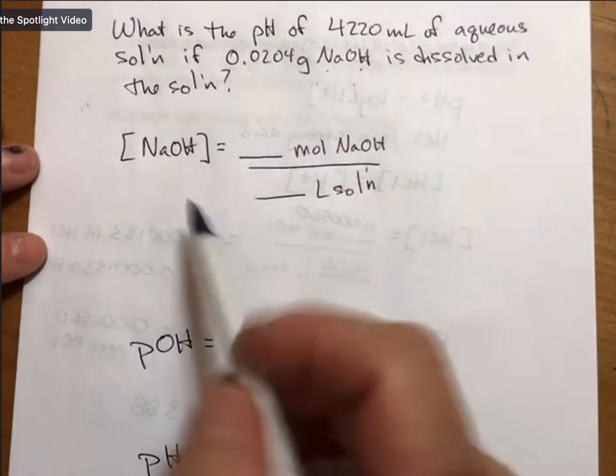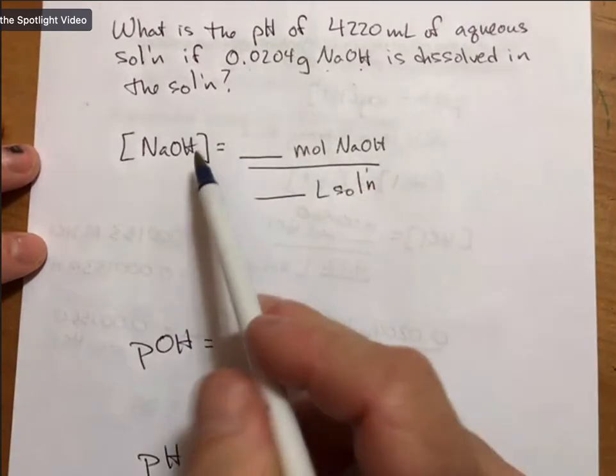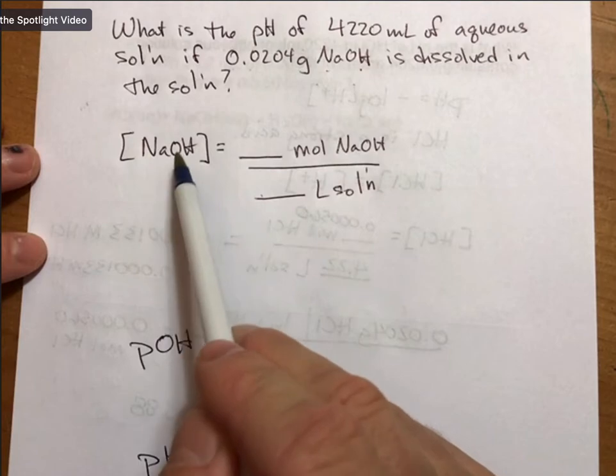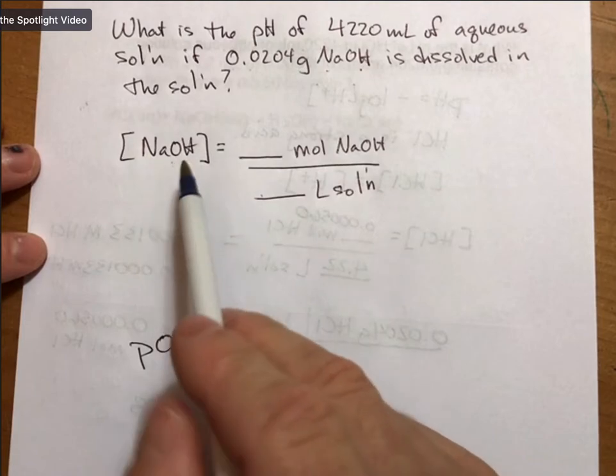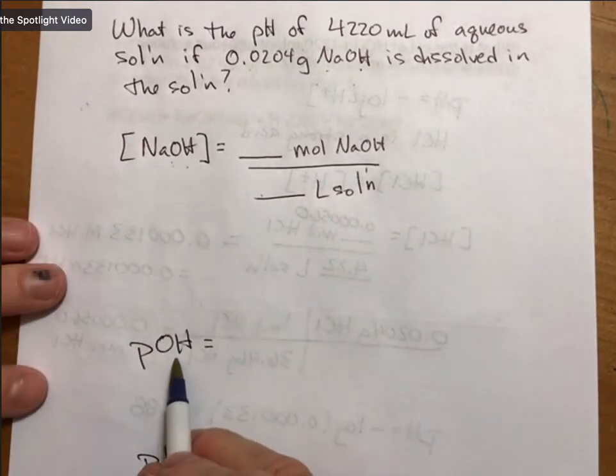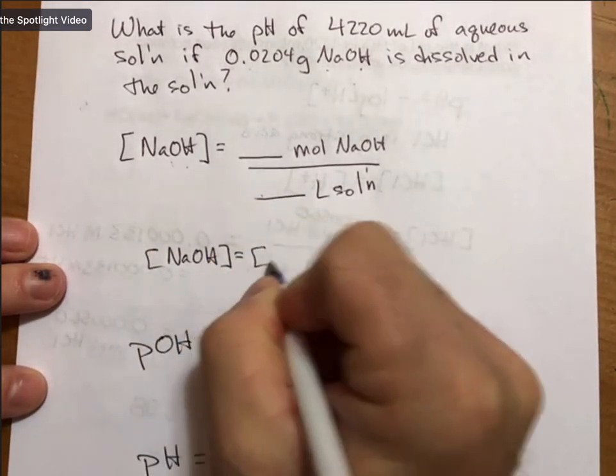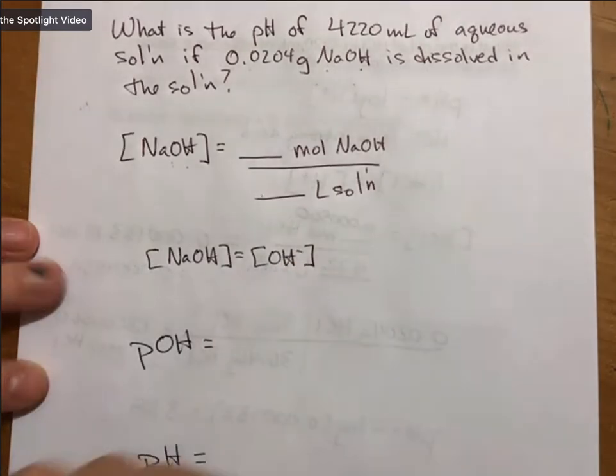As a roadmap, we're going to use the information in the problem statement to find the concentration of sodium hydroxide. Because sodium hydroxide is a strong base, the concentration of sodium hydroxide will be equal to the concentration of hydroxide itself, and then we can find pOH and pH.